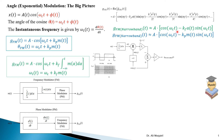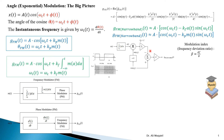We can implement the narrow band generator by direct implementation of the signal. This integral appears because we have A, which is the integral of the message. If you want the phase modulated signal, all you need to do is remove the integral and use K_P instead of K_F. This circuit is a direct implementation of the equation. Using the narrow band generator, we can then find the wide band FM generator.